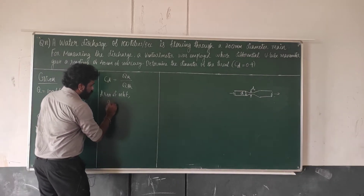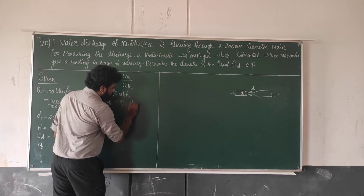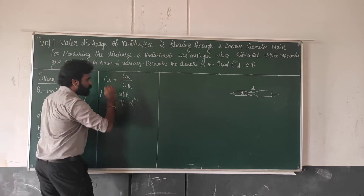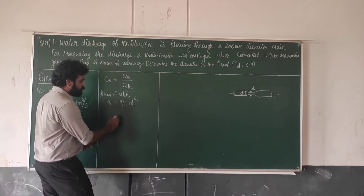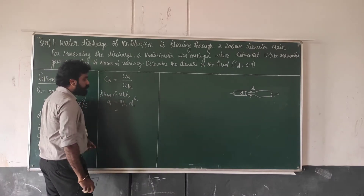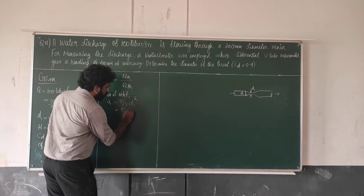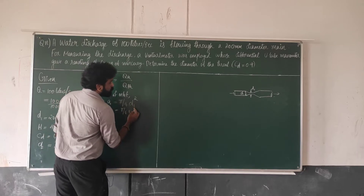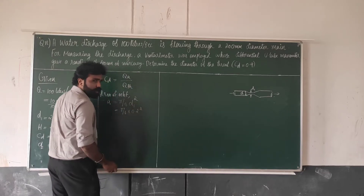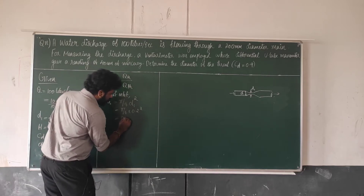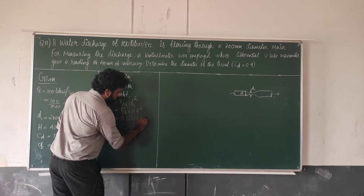Using the formula, A1 is equal to π/4 times D1 squared. For a circular section, A1 equals π/4 into D1 squared. So π/4 into 0.2 squared gives A1 equal to 0.0314 meter square.